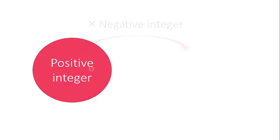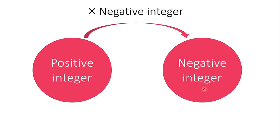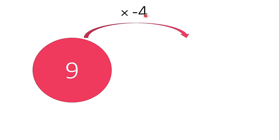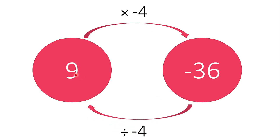Another one. If we have a positive integer multiplied by a negative integer, the product is negative. Same when we divide negative by a negative, the quotient is positive. Again, when we multiply positive by negative, the product is negative, but when we divide negative by another negative, it is positive. For example, 9 multiplied by negative 4, the product is negative 36. But when we divide negative 36 by negative 4, the quotient is positive 9.